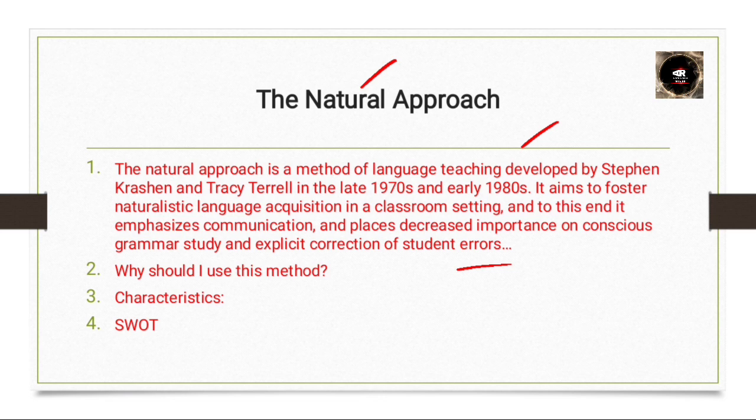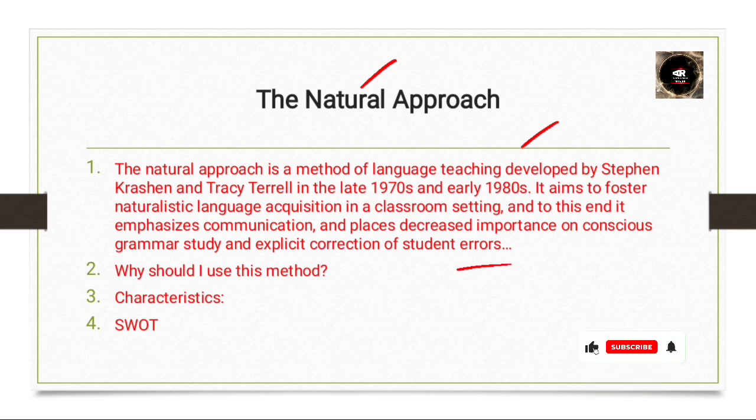The natural approach shares many features with the direct method, which we have already discussed in previous videos. The direct method, also known as the natural method, was formulated around 1900 and was also a reaction to the grammar translation method. Both the natural approach and the direct method are based on the idea of enabling naturalistic language acquisition in the classroom, but they differ in that the natural approach puts less emphasis on practice and more on exposure to language input and on reducing learners' anxiety.